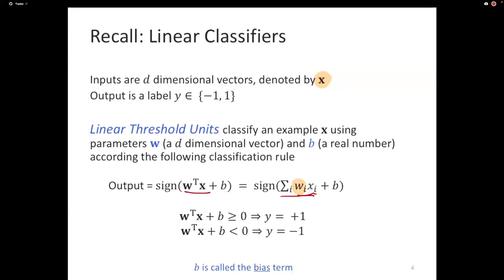At prediction time, a new input comes in as a vector x. The classifier multiplies every feature with its associated weight — that's wi times xi — and adds them all up. That summation equals the dot product w transpose x. Add a real number called a bias, and you get a number. If that number is positive, the classifier predicts plus 1; if negative, it predicts minus 1. The behavior of the classifier is entirely defined by w and b. The job of any learning algorithm is to find a good set of w's and b so it stops making mistakes.